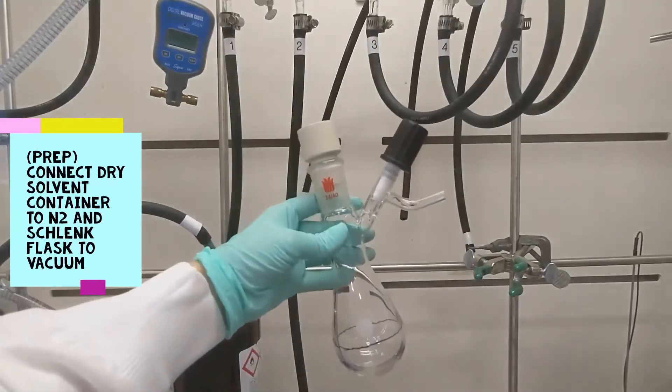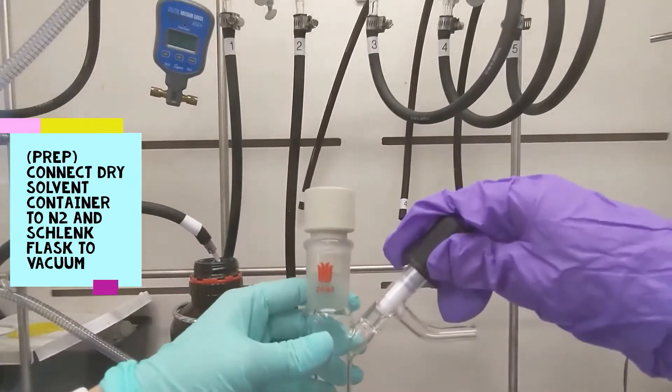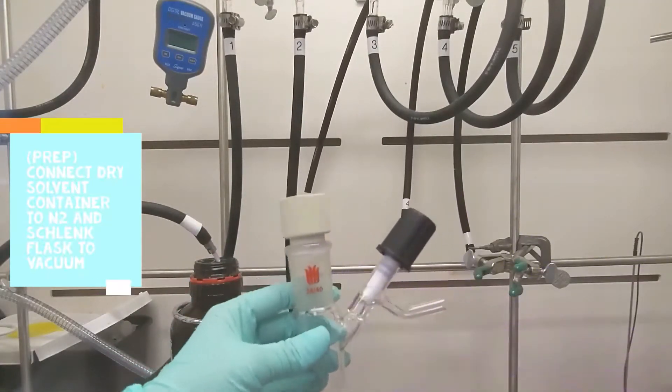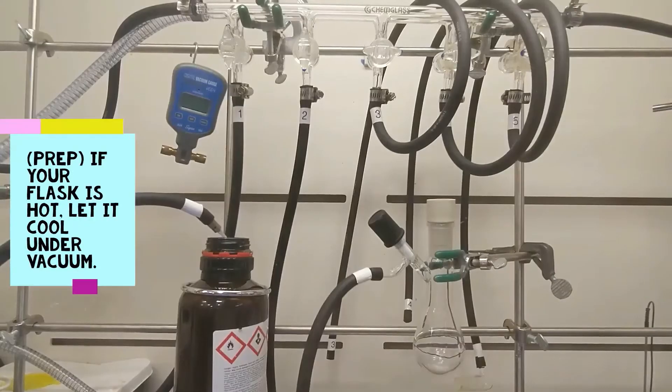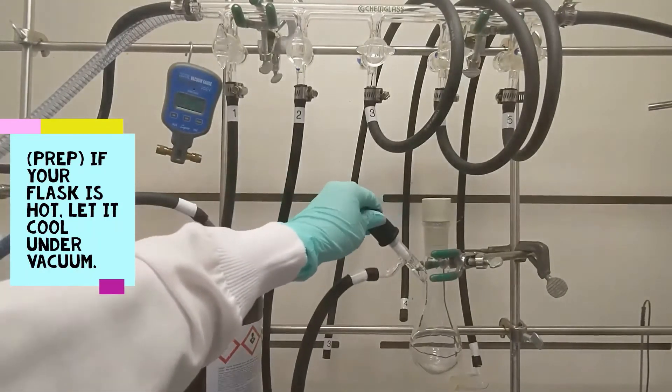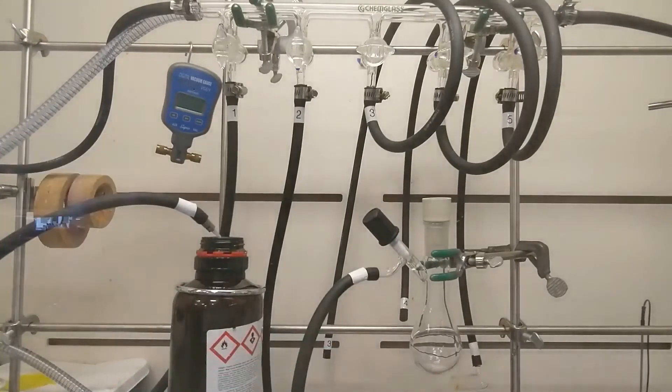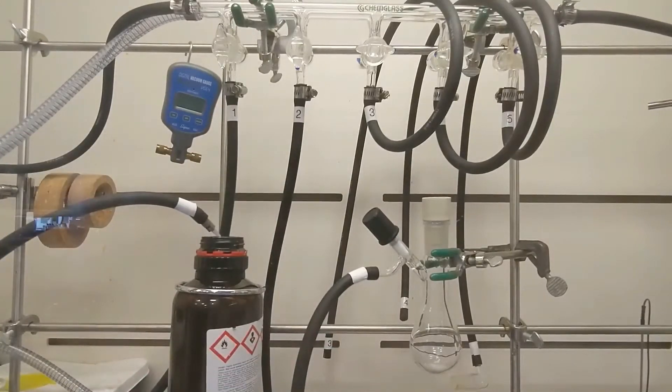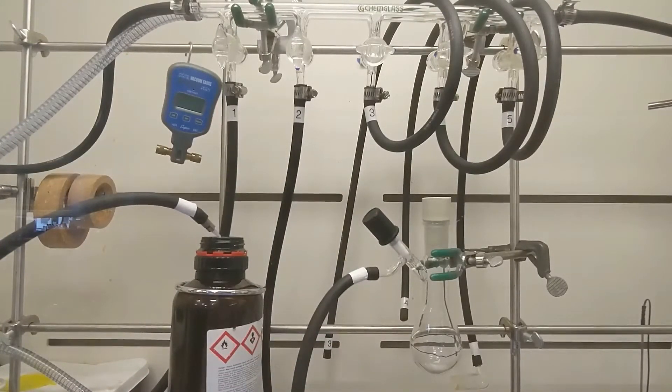So first, take your oven-dried Schlenk flask and make sure that your flask is properly sealed with a tightened stopcock and septum. Connect the Schlenk flask and dry solvents container to your Schlenk line. Here the solvent is under nitrogen or positive pressure and the flask is cooling under vacuum, negative pressure.